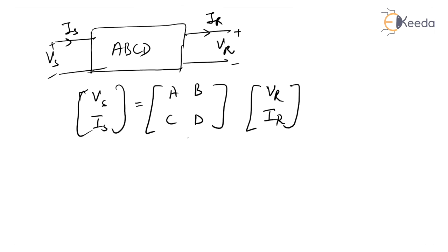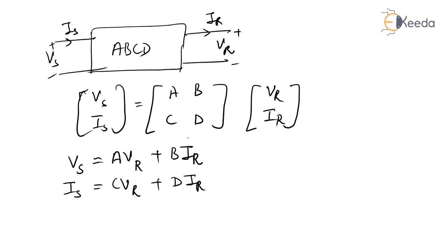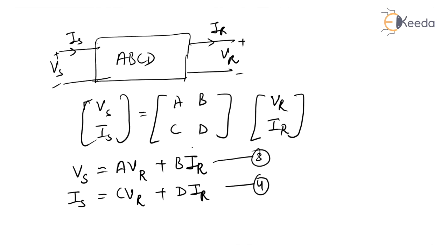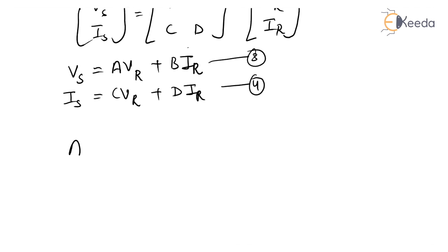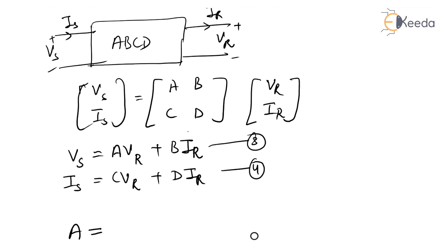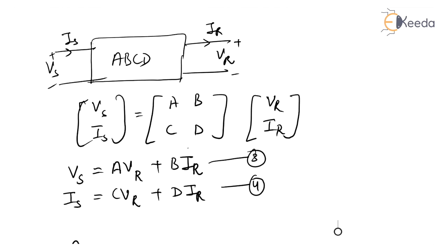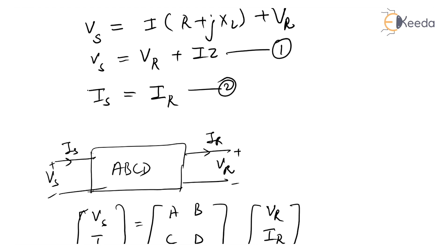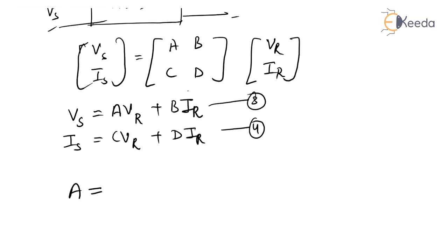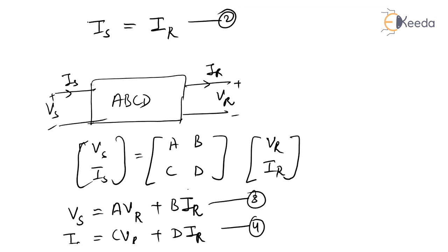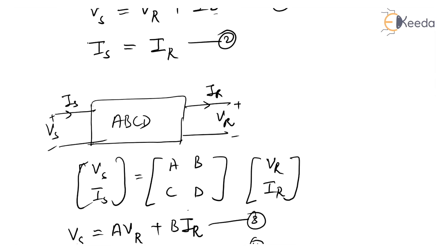In equation form: Vs = A·Vr + B·Ir (equation three), and Is = C·Vr + D·Ir (equation four). Comparing equations one and two with three and four: A equals 1, B equals Z, C equals 0, and D equals 1.